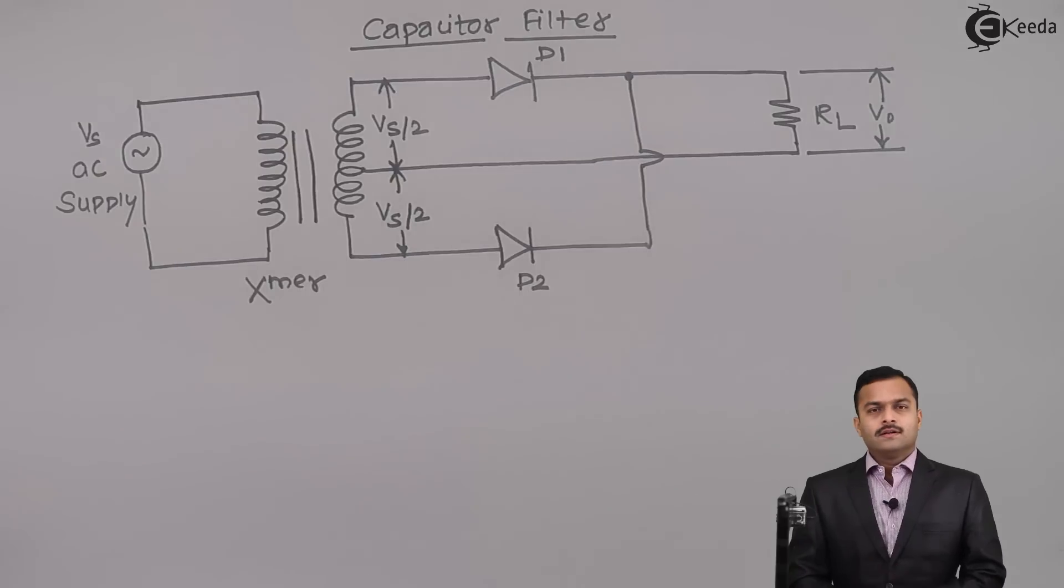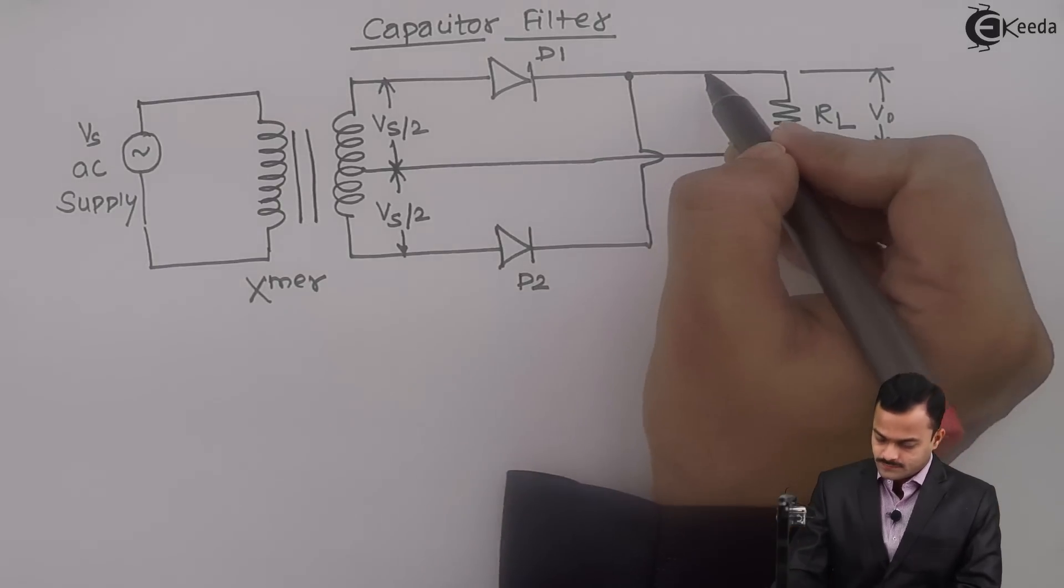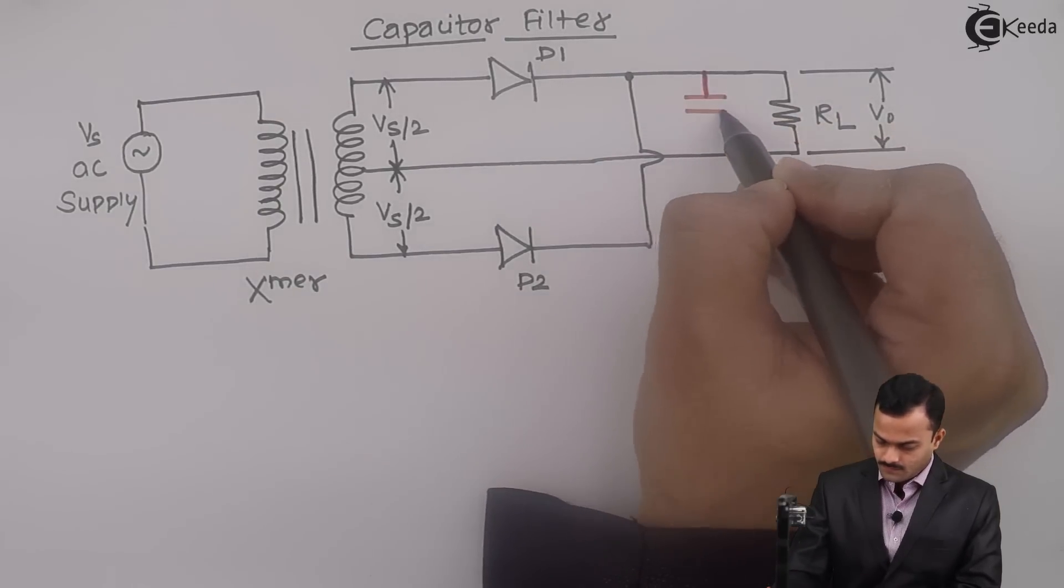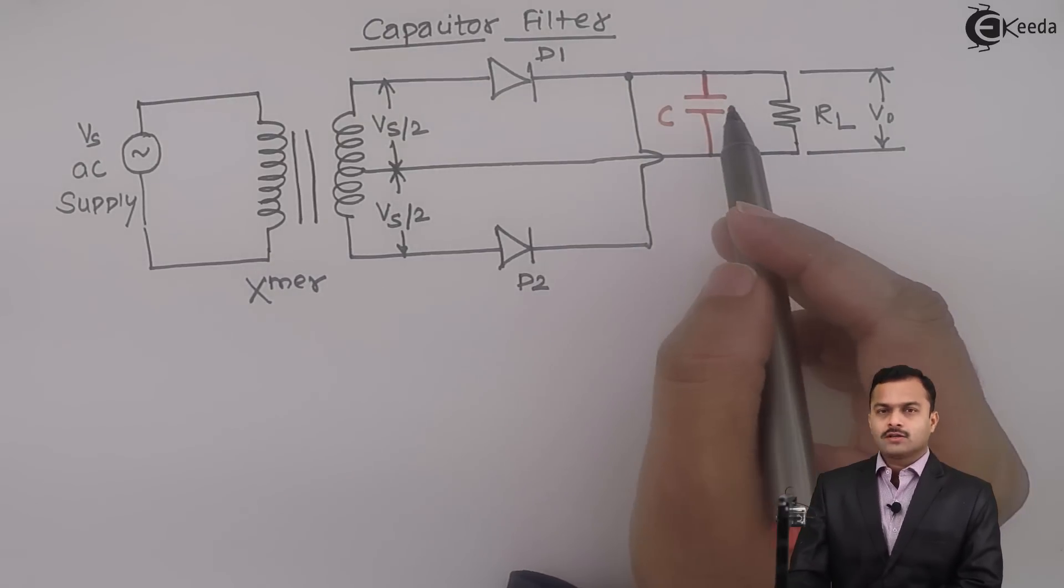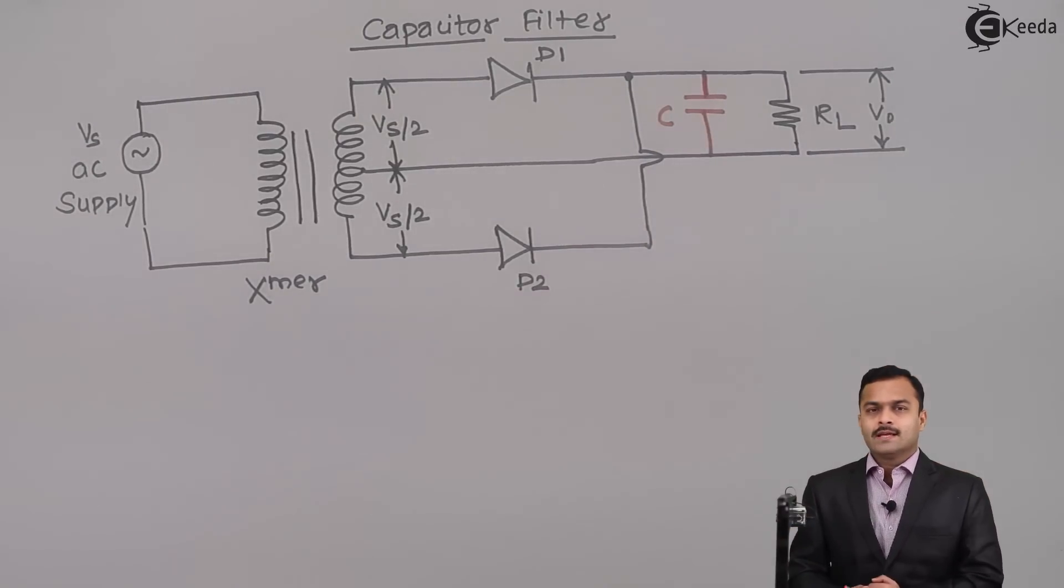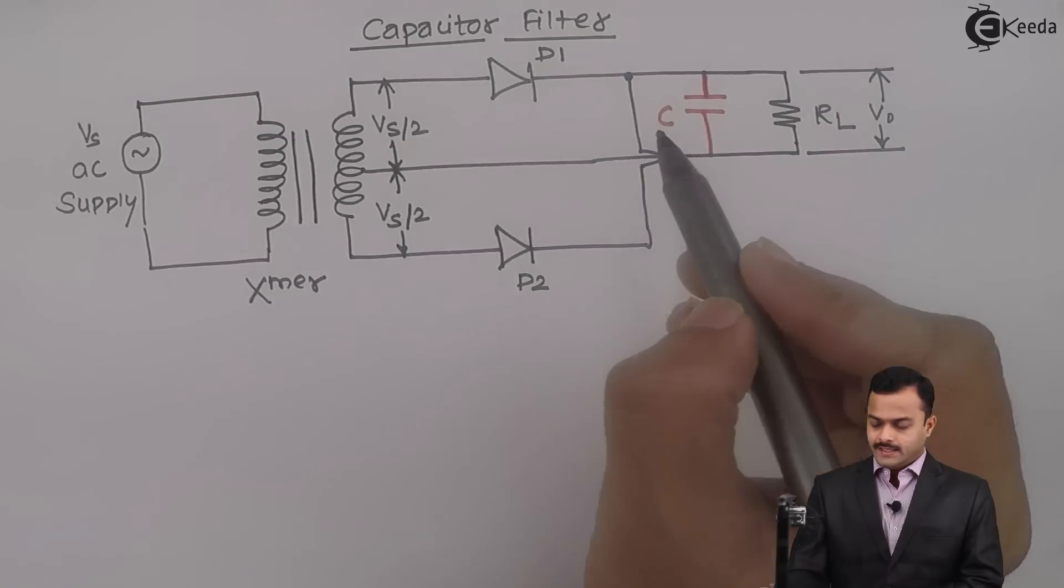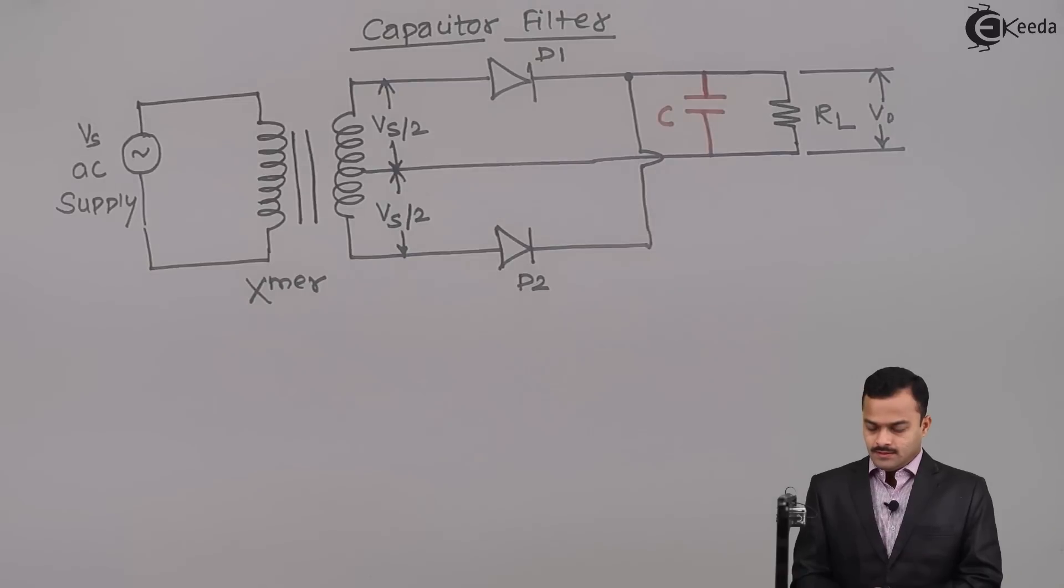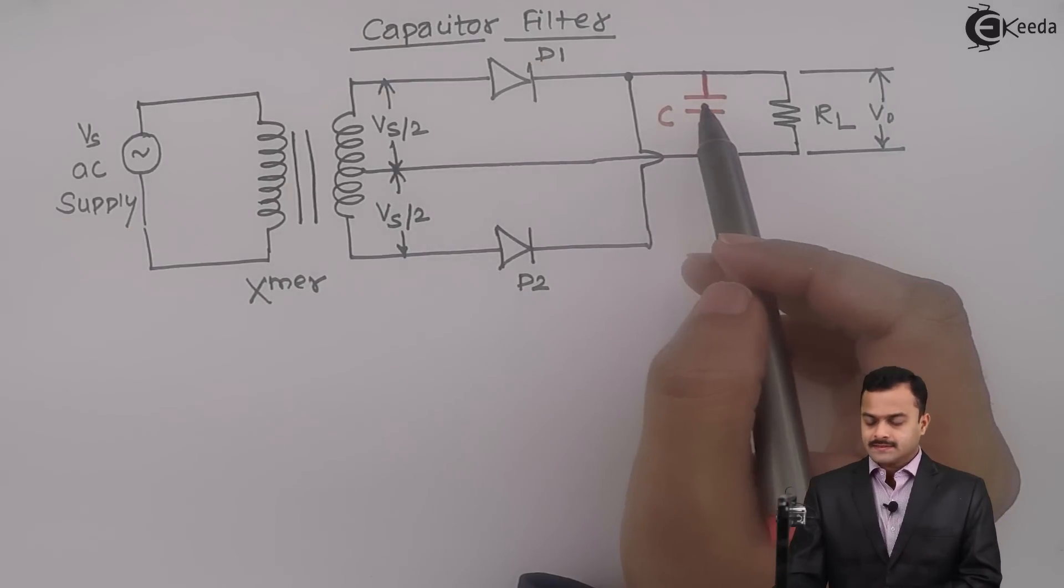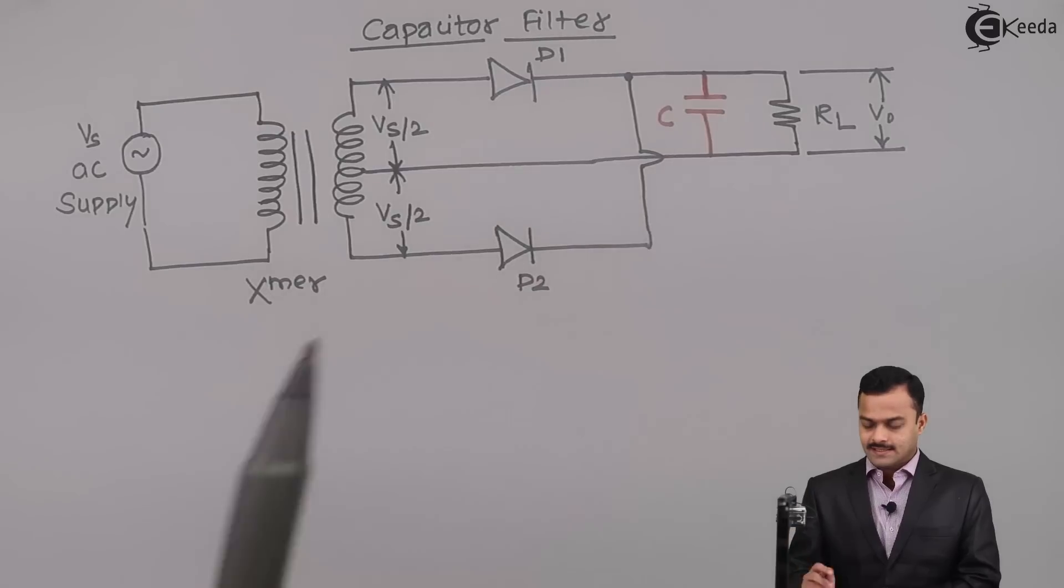Now it is a capacitor filter, so we will connect it across the load. The capacitor is connected across the load and the value is a few microfarads in order to make the output voltage ripple free. Let's see how the capacitor will act in this case.